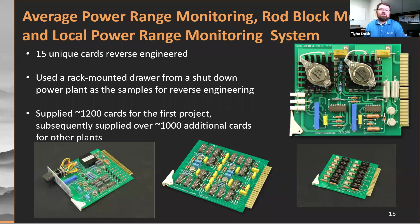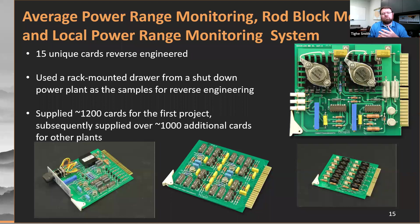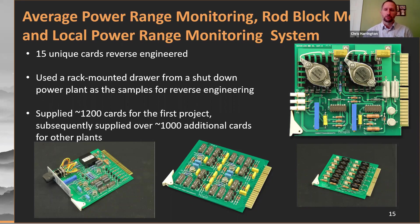Another good case study is a large production run. This was a project that took a year and had a lot of parts and pieces to support the average power range monitoring, rod block monitoring, and local power range monitoring system. In a boiling water reactor, it operates the fission chambers that are inside the core, checks to make sure everything's okay, and puts some interrupts in if things are not the way they should be. We were approached by a customer to tackle this power monitoring system — a great opportunity to provide a solution for the whole system. There were 15 unique cards with many quantities that we had repaired and supplied over the past.